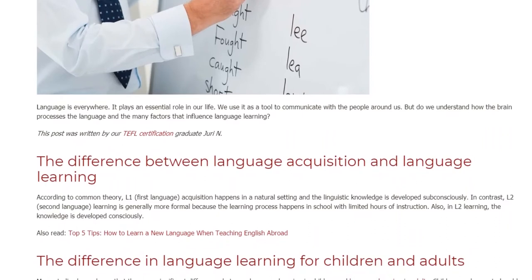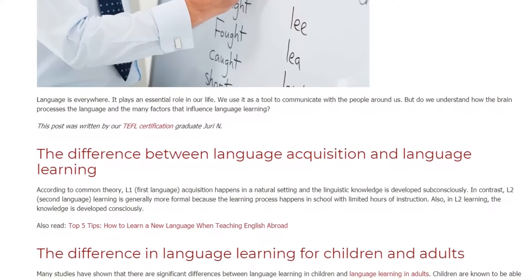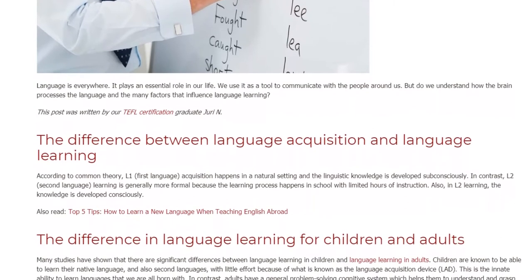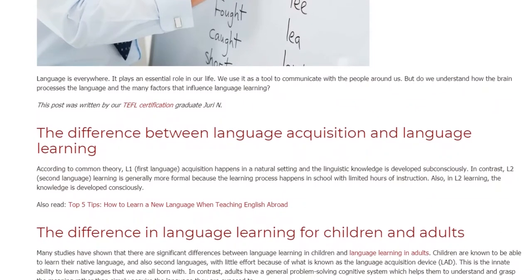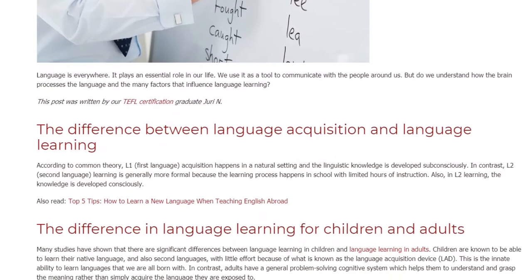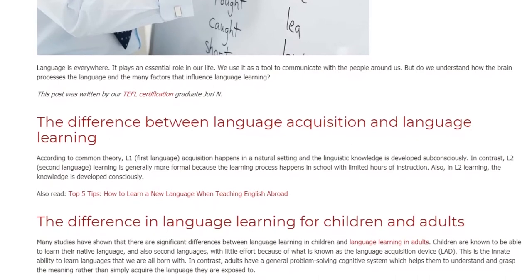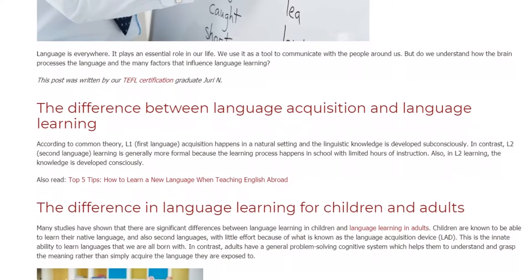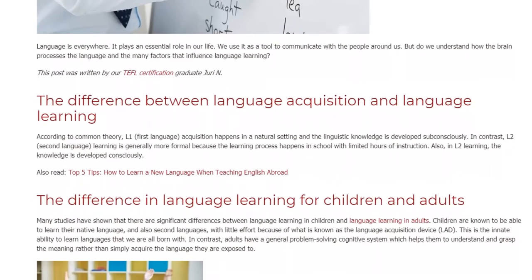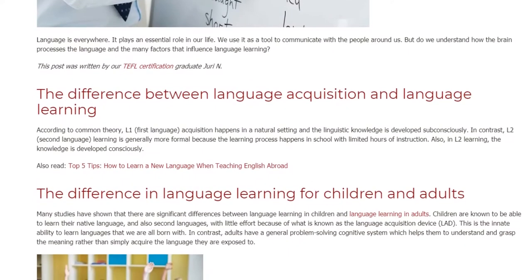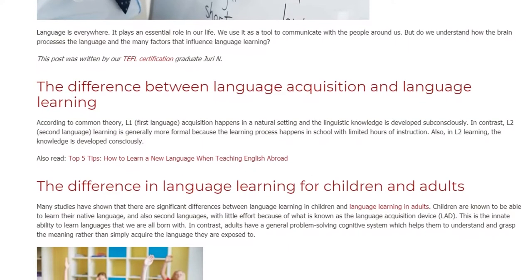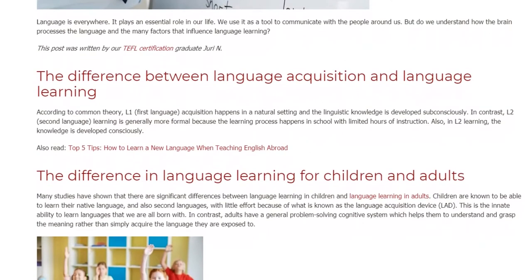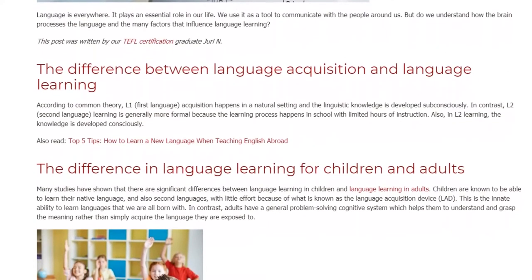The Difference in Language Learning for Children and Adults. Many studies have shown that there are significant differences between language learning in children and language learning in adults. Children are known to be able to learn their native language, and also second languages, with little effort because of what is known as the Language Acquisition Device — the innate ability to learn languages that we are all born with.